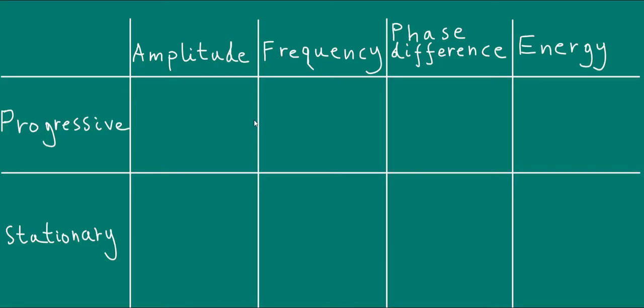Really, there are just four things you need to be aware of: amplitude, frequency, phase difference, and energy — when it comes to comparing and contrasting progressive and stationary waves. So let's look at each of these in turn.